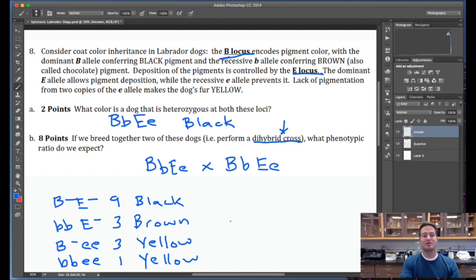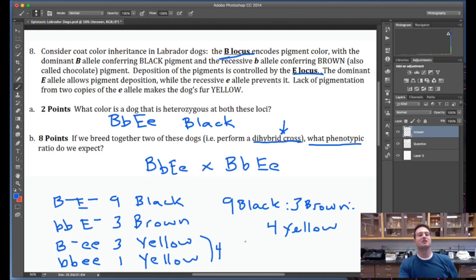The correct answer to this epistasis problem, I'm just asking you, what is the phenotypic ratio that we expect? To answer that, you would add these up and you would just say 9 black to 3 brown to 4 yellow. Remember, this is a subtle application of the addition rule for working with probabilities. How can you get a yellow lab with this particular cross? It can be this genotype or this genotype. So you add those together.